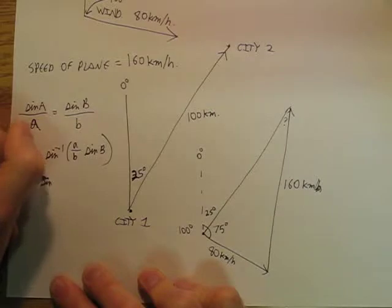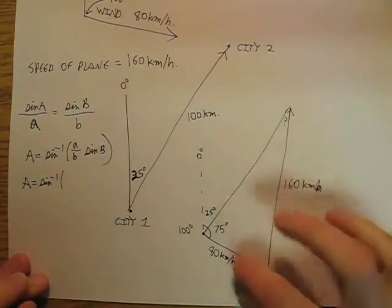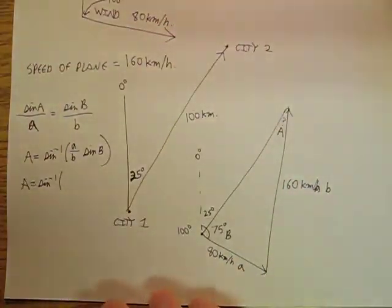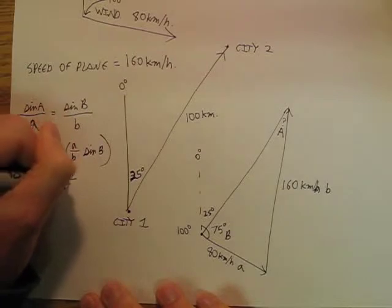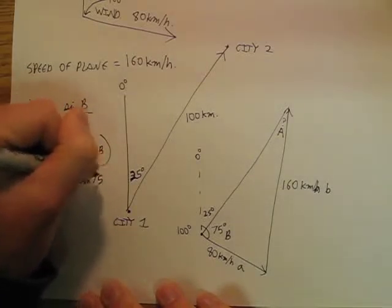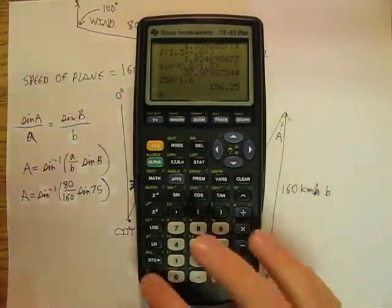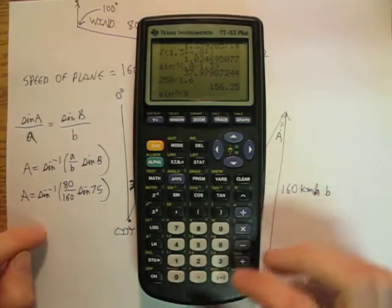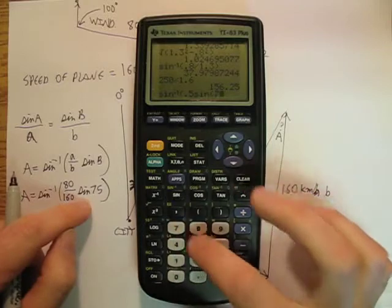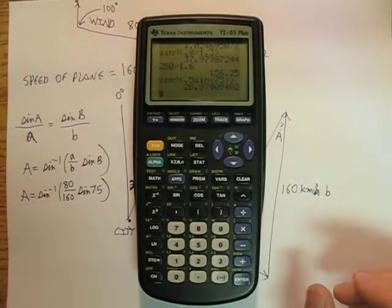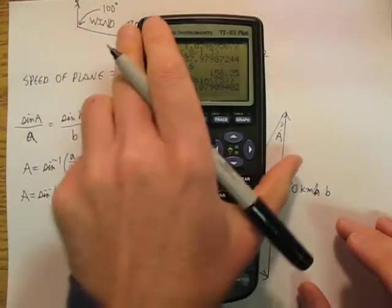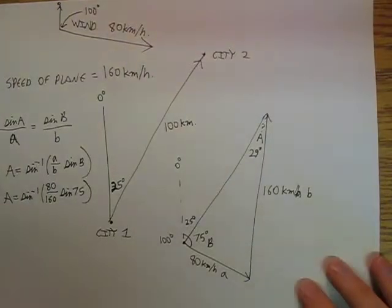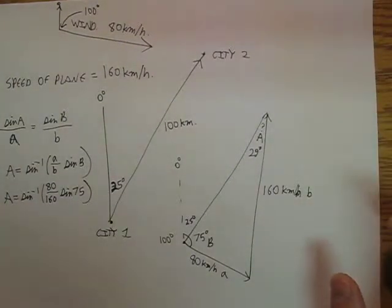So A is going to be the sine inverse. I want to find that angle, so this is little a, this is little b, this is big B, this is big A. So I'm going to say 80 over 160 sine 75. And I'm going to do that on my calculator. I know what 80 divided by 160 is, that's 0.5 times sine of 75. So I get 28.9 degrees, so we'll call it 29 degrees. So I know that this is 29 degrees, but that still doesn't tell me what angle I want to fly at.